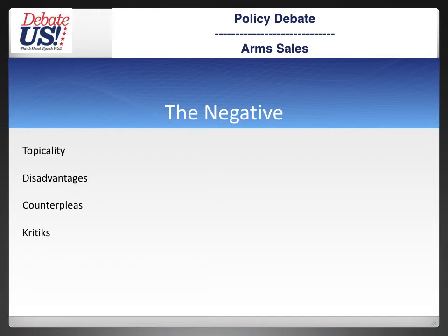First, in terms of topicality, there are a lot of potential negative topicality arguments. I did discuss some of those in the introductory lecture that was mostly about the words and what they mean. Arguments like 'substantially reduced' are going to become important, but I don't want to go into those here as I already covered that in the introductory lecture. So please make sure you have listened to that. Now I'm going to discuss disadvantages, counterplans, and critiques.